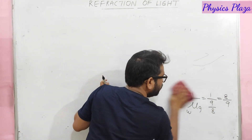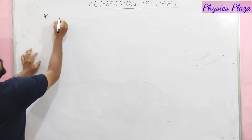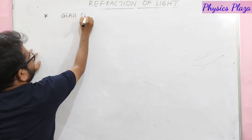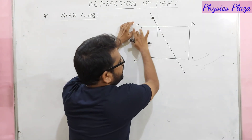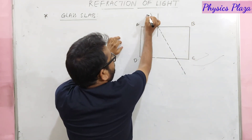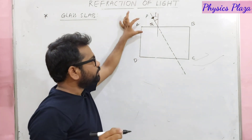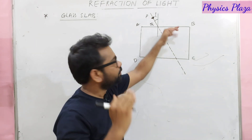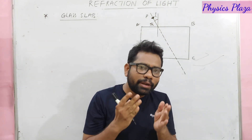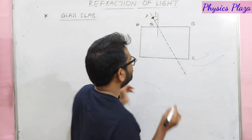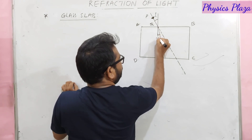Refraction through a glass slab: consider a rectangular glass slab ABCD. PQ is the incident ray with angle of incidence i. At surface AB, light moves from air to glass — rarer to denser — so it slows down and bends towards the normal. This gives the refracted ray QR inside the glass. At surface DC, light moves from glass to air — denser to rarer — so it speeds up and moves away from the normal.